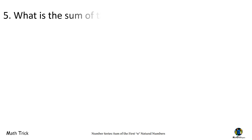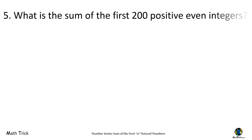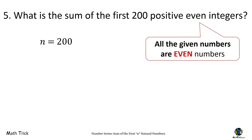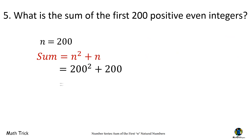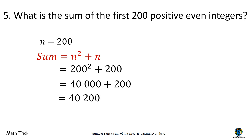What is the sum of the first 200 positive even integers? The number of terms is 200. Take note that all the given numbers are even numbers. To find the sum when all numbers are even, we can use the formula: N squared plus N. Substituting: 200 squared plus 200 equals 40,000 plus 200 equals 40,200. The sum of the first 200 positive even integers is 40,200.